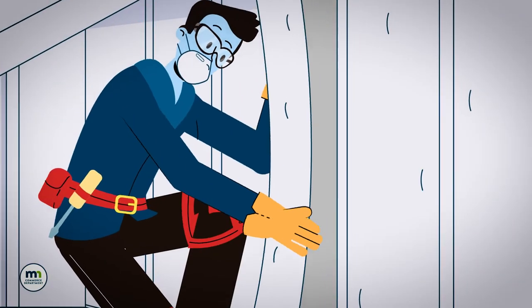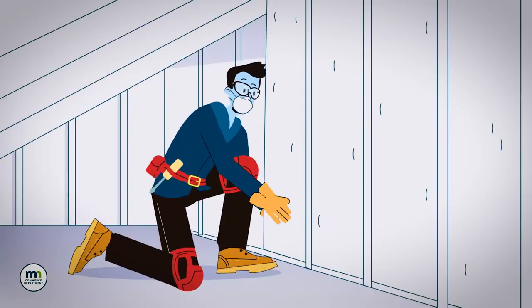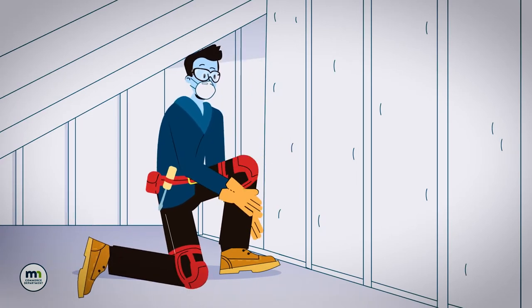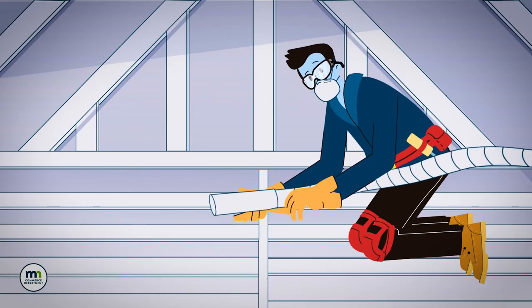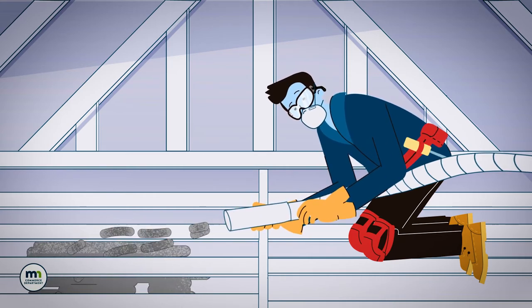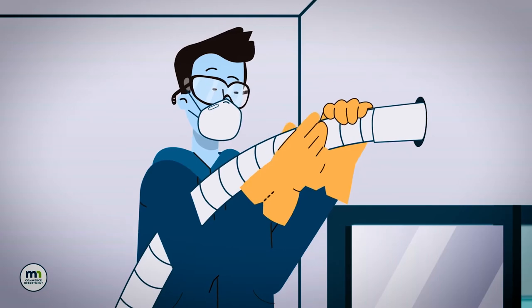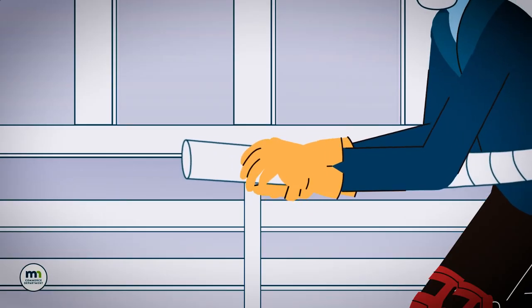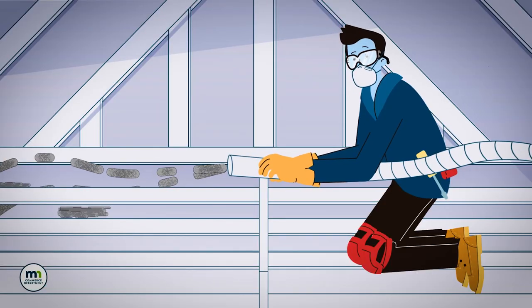As part of weatherizing your home, insulation may be added to walls, basements, or attics. A common form of insulation is blown into hidden areas like attics and walls. It consists of cellulose pieces made of recycled paper, sent through a tube into the walls or attic.